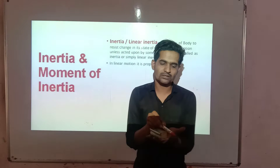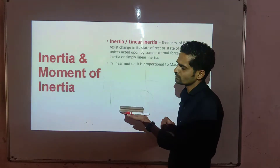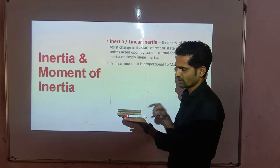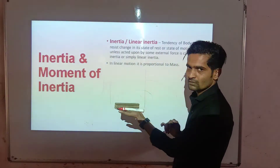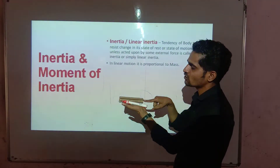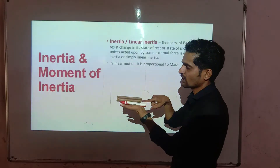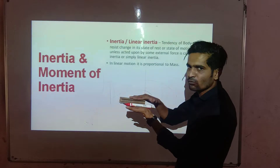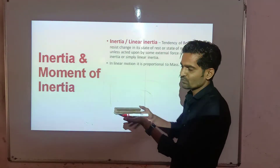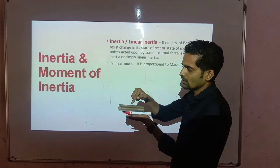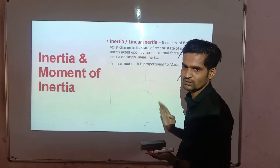Take an example. Suppose there is a duster and a pen, both placed on a table. If you want to move them, which body requires more force? Of course, the duster requires more force. It means both the duster and pen are in the state of rest, but when force is applied, the duster has more opposition and resistance. This means linear inertia depends on the mass of the body. In linear motion, inertia is dependent on the mass of the object.